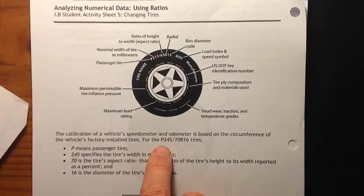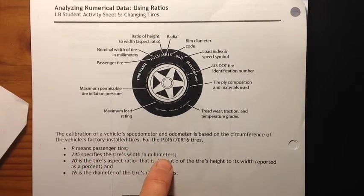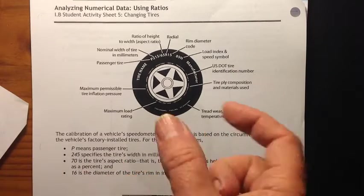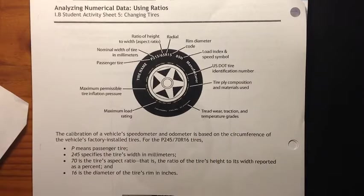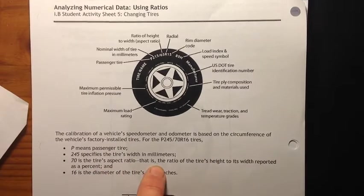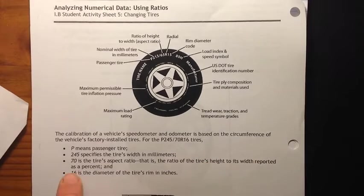P means it's a passenger tire. 245 specifies the tire's width in millimeters. The tire's width in millimeters, so that's from, if you're looking at it from the front of the car, how wide the tire is. 70 is the tire's aspect ratio, that is, the ratio of the height of the tire to its width reported as a percent.